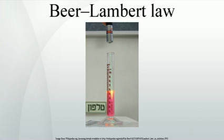The base-10 and base-e conventions must not be confused because they give different values for the absorption coefficient. However, it is easy to convert one to the other. The transmission, or transmissivity, is expressed in terms of an absorbance which, for liquids, is defined as, whereas, for gases, it is usually defined as.